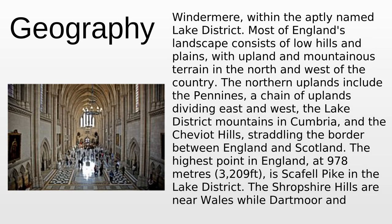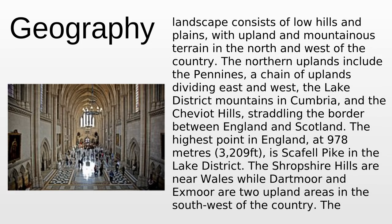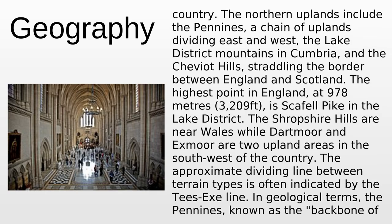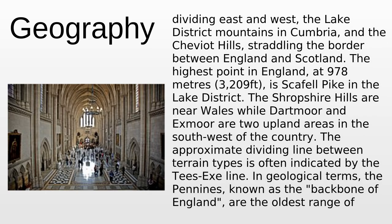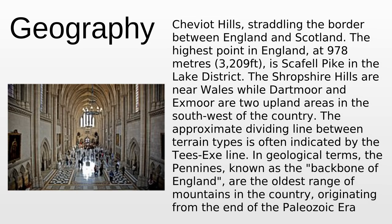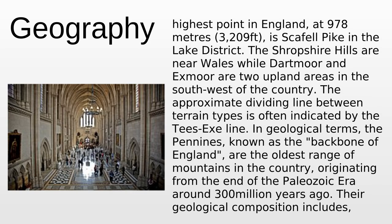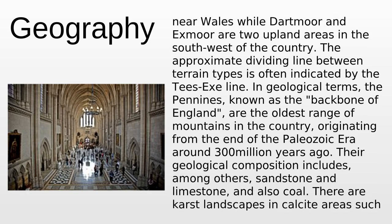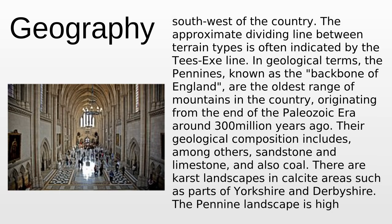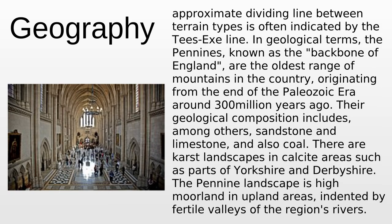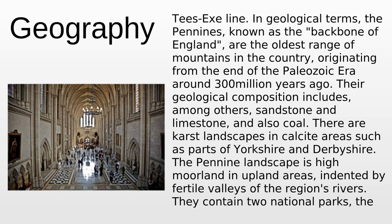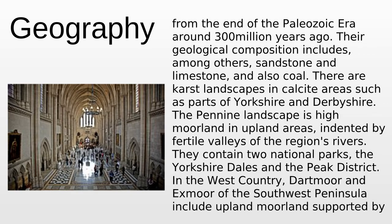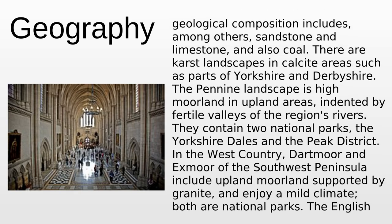Most of England's landscape consists of low hills and plains, with upland and mountainous terrain in the north and west. The northern uplands include the Pennines, a chain of uplands dividing east and west, the Lake District mountains in Cumbria, and the Cheviot Hills straddling the border between England and Scotland. The highest point in England at 978 meters is Scafell Pike in the Lake District. The Shropshire Hills are near Wales, while Dartmoor and Exmoor are two upland areas in the southwest. In geological terms, the Pennines, known as the backbone of England, are the oldest range of mountains in the country, originating around 300 million years ago from the end of the Paleozoic era.